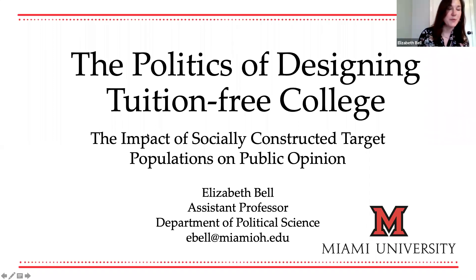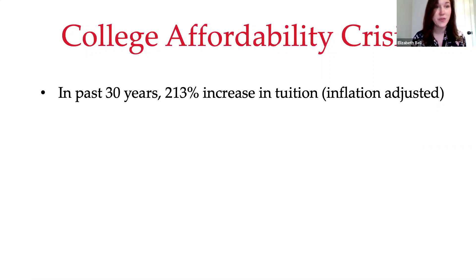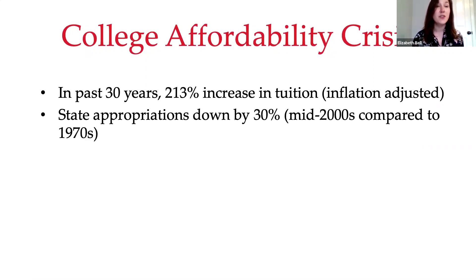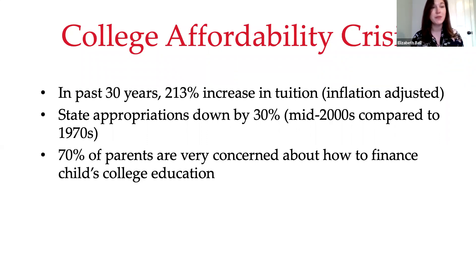First, I'm going to talk more broadly about the college affordability crisis that we're facing right now, which is going to be made even more difficult by the COVID-19 crisis. In the past 20 or 30 years, we've seen a 213% increase in tuition, and that's inflation adjusted. At the same time, we've also seen serious declines in state appropriations. From the 1970s all the way to the mid-2000s, state appropriations are down by around 30%.